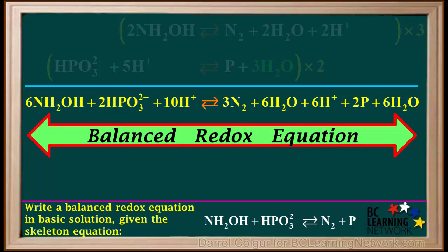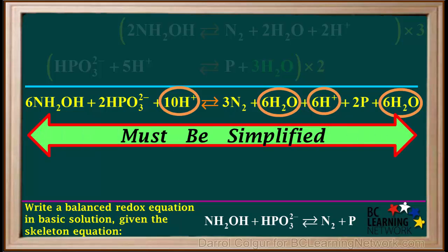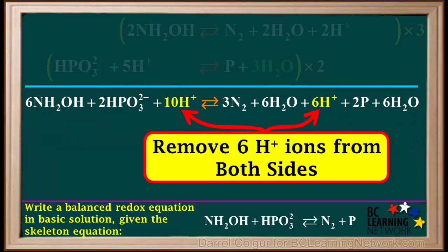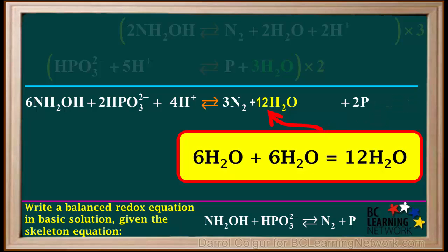Now, we have the balanced redox equation. But it has H+ ions on both sides, and two sets of water molecules on the right side. So, this equation must be simplified. We start by removing 6H+ ions from both sides. Removing 6H+ from the right side leaves us with none, and removing 6H+ from the left side leaves us with 10 minus 6, or 4H+ ions. We simplify the water by adding the two sets of 6H2O molecules on the right side to give us 12 water molecules altogether.